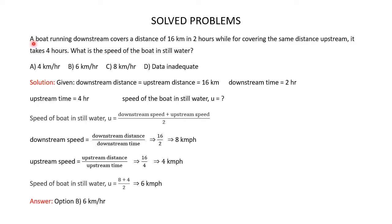A boat running downstream covers a distance of 16 kilometers in 2 hours, while for covering the same distance upstream it takes 4 hours. What is the speed of the boat in still water? Downstream distance is 16 km, downstream time is 2 hours. Upstream distance is also 16 km and upstream time is 4 hours.